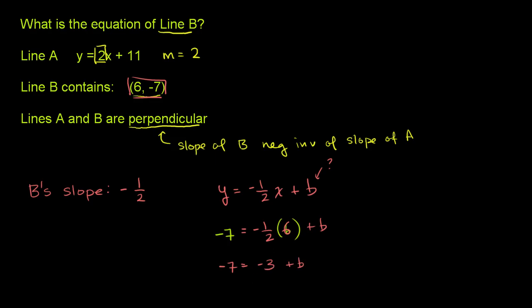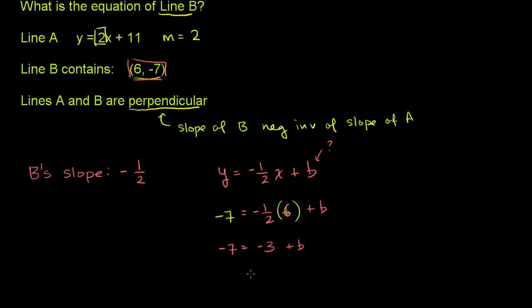Let's add 3 to both sides of this equation. So if we add 3 to both sides, I just want to get rid of this 3 right here. What do we get? The left-hand side, negative 7 plus 3 is negative 4, and that's going to be equal to—these guys cancel out—that's equal to b, our y-intercept.